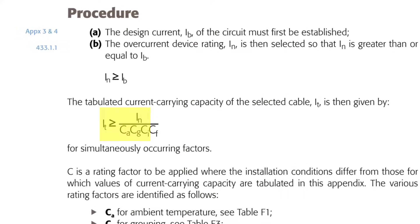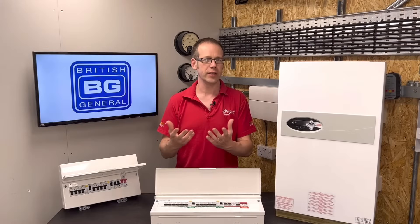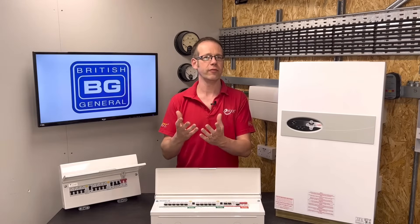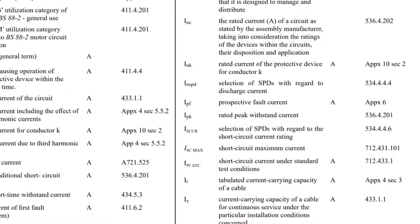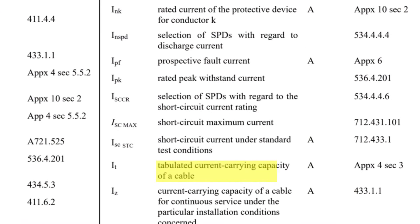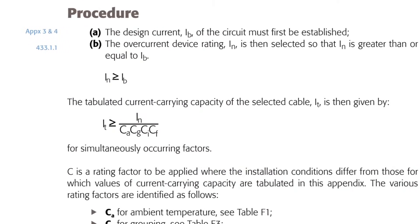In appendix F of the guide we find this formula: IT must be greater than or equal to IN divided by CA times CG times CI times CF. It looks a little daunting to start with but it's pretty straightforward when we break it down. IT — I with a lowercase t subscript — means the tabulated current carrying capacity of a cable, meaning its value is recorded in a table. IN is the nominal rating of the protective device, and all those C's along the bottom of the formula are our rating factors.